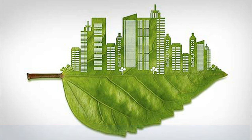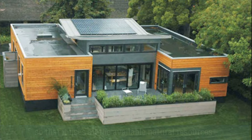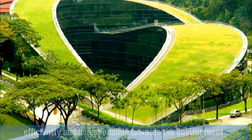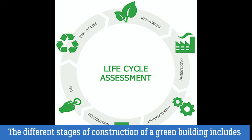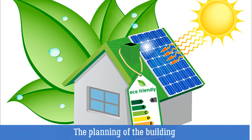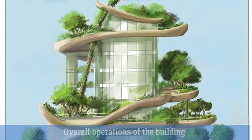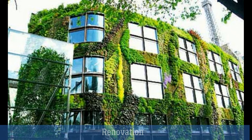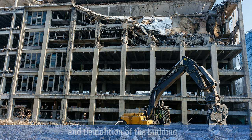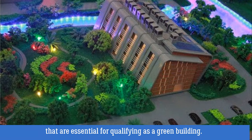What is a green building? A green building is designed in an ecological way so that it uses all the available natural resources efficiently and is responsible towards the environment during each and every stage of construction. The different stages include planning, construction, overall operations, reoccurring maintenance, renovation, and demolition of the building. These stages can be classified into broad categories that are essential for qualifying as a green building.